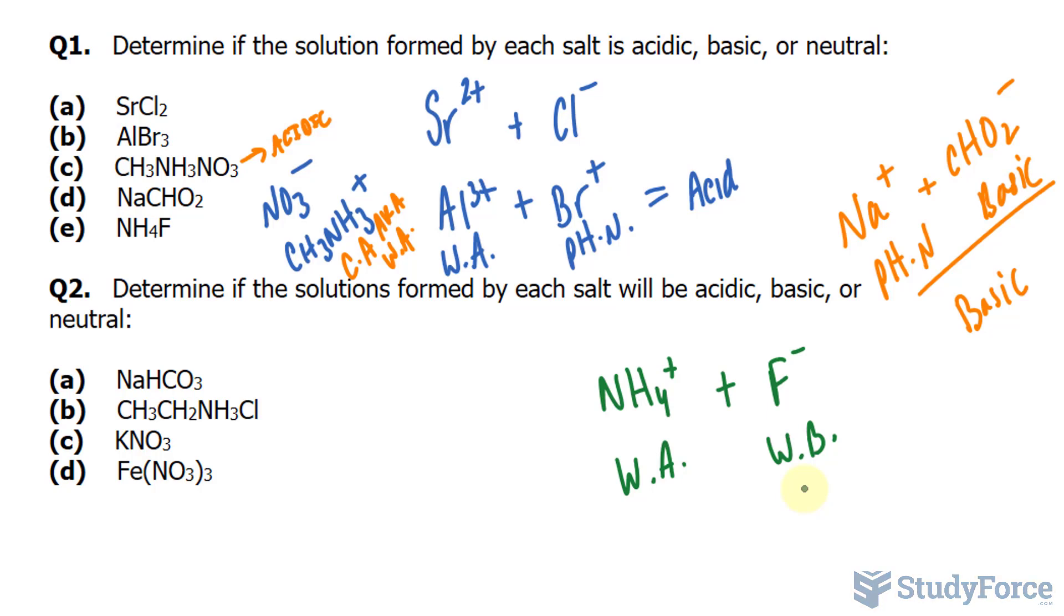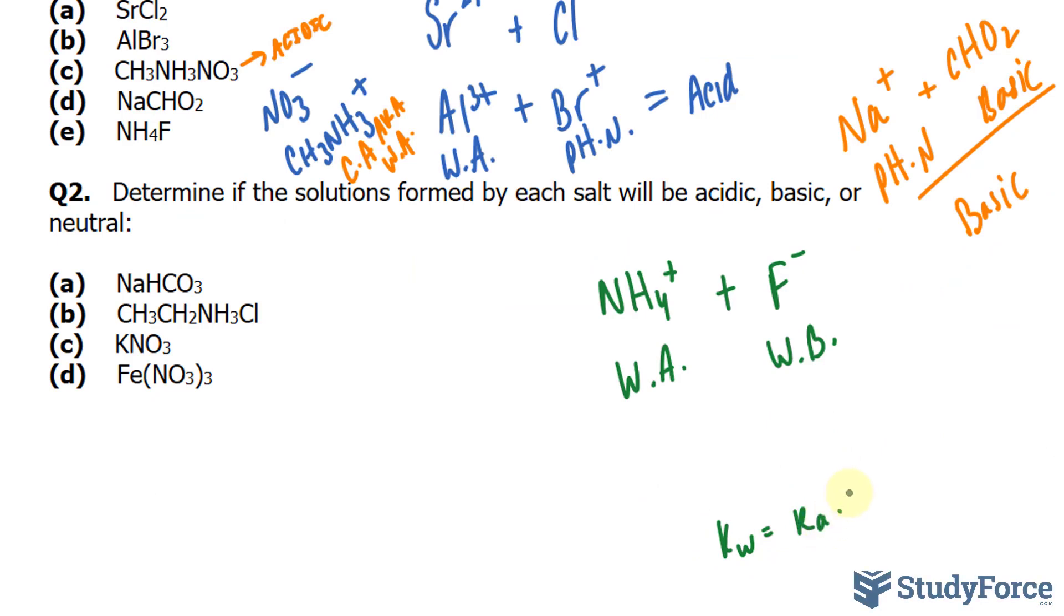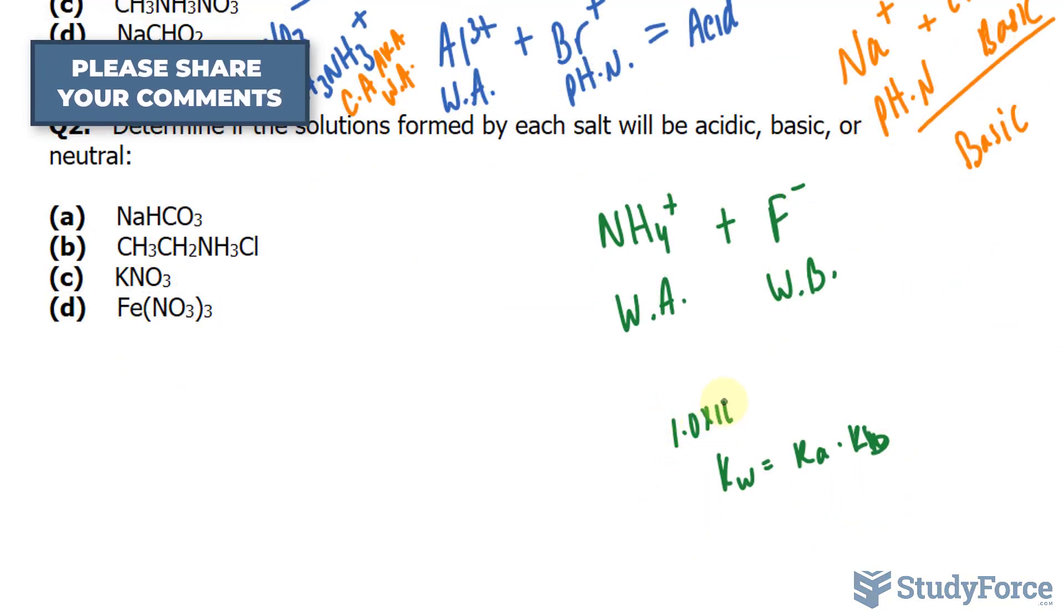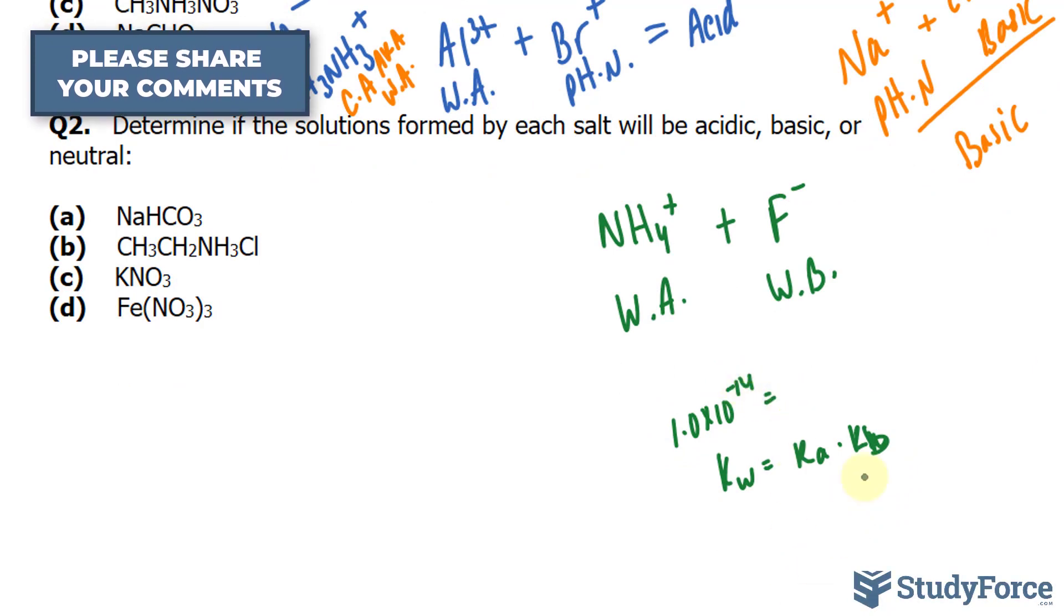To determine the overall acidity or basicity of this solution, you have to compare the Ka for the acidic cation with the Kb constant of the basic anion. And here's what I mean. Remember the relationship that Kw is equal to Ka times Kb. We know what Kw is. It's 1.0 times 10 to the power of negative 14.